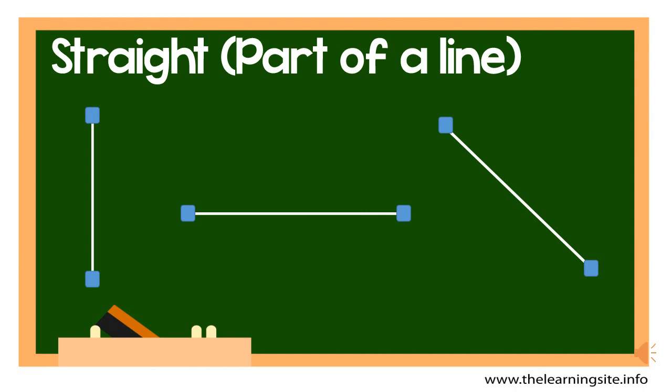Straight parts of a line can be vertical, horizontal or diagonal. It doesn't matter how the line is standing as long as it is straight.